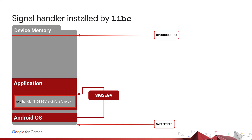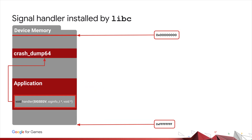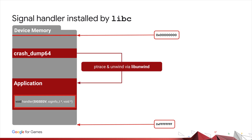In this case, a SIGSEGV. The consequence of this is that the app's signal handler is invoked. Now depending on what version of Android the app is running on, the libc signal handler will request a tombstone either from debuggerd or crash_dump — two debugging processes available on Android. One of them will attach to the app in order to ptrace it and unwind the stacks. Stack unwinding is a fairly complex process, but luckily libraries exist to help.